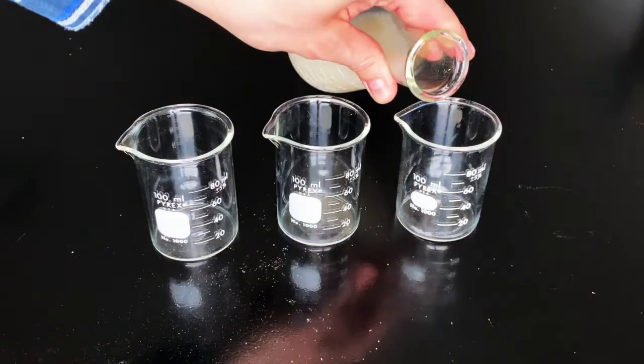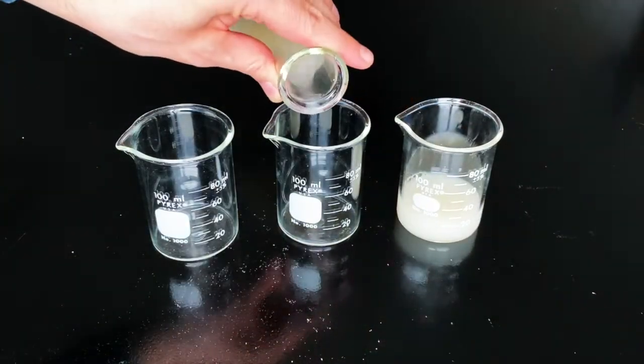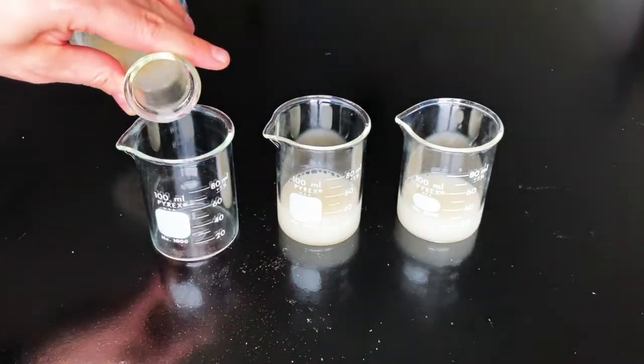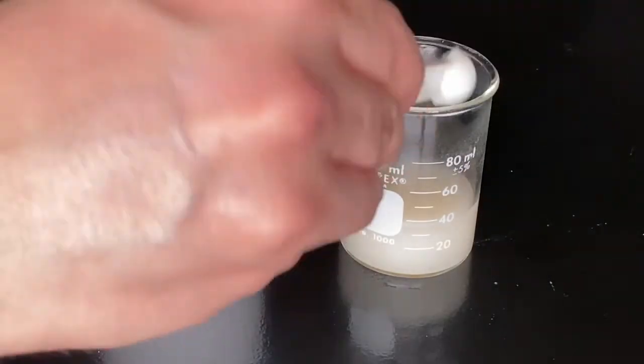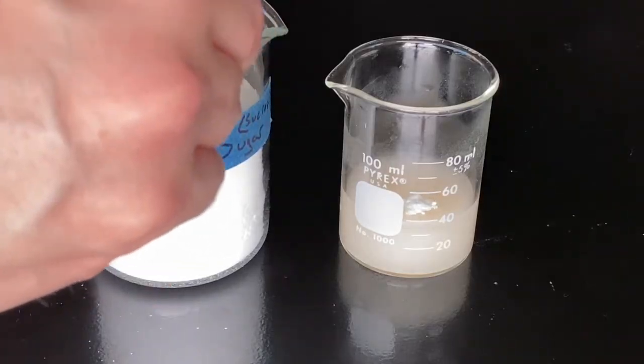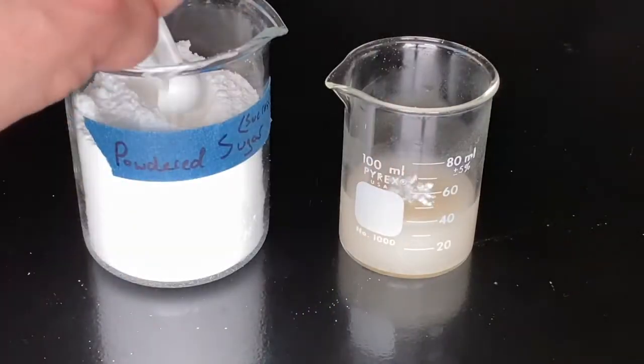If your experiment is intended to test different kinds of sugar, then divide your yeast solution evenly into several different beakers first. Then, you can place different kinds of sugar in each beaker. Make sure you add the same amount of sugar to each beaker to control your variables.